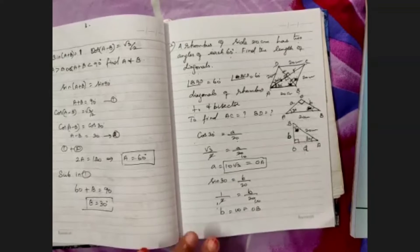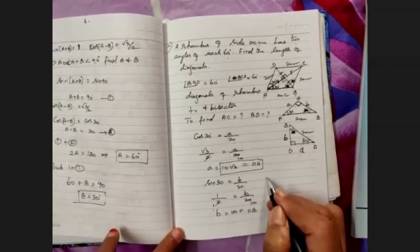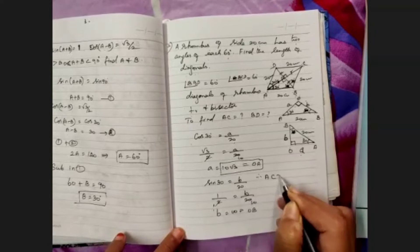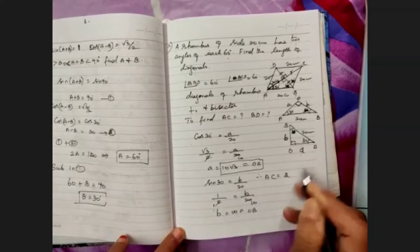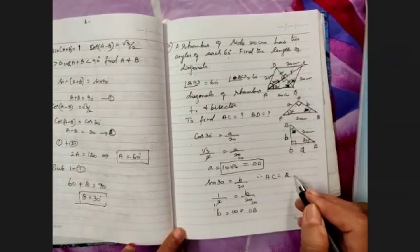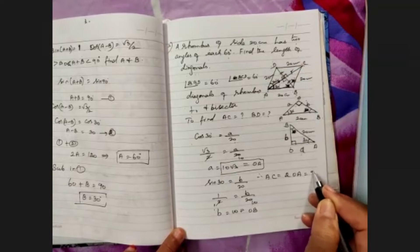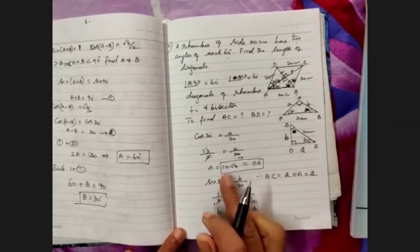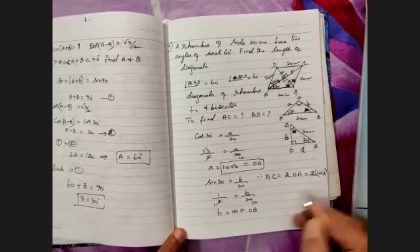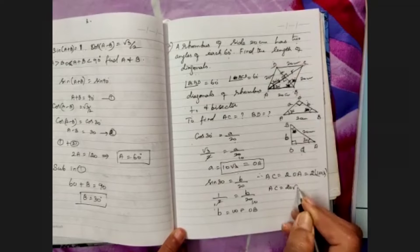But we want to get the full length of the diagonal. So diagonal AC equals two times OA, which equals two times 10 root 3. Therefore, AC equals 20 root 3 centimeters.